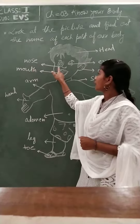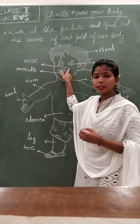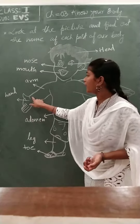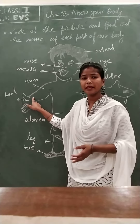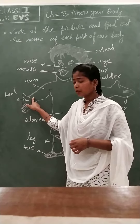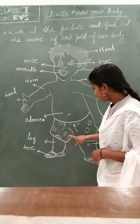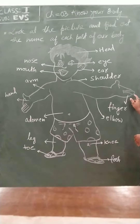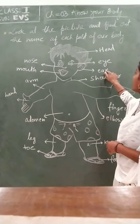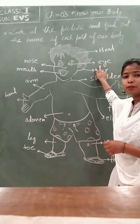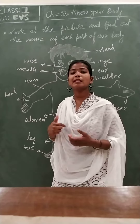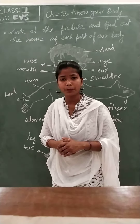The nose helps us to smell things. The hand helps to touch or take things. The ear helps to listen to music, and the eyes help to see. The tongue helps to taste things. Thank you.